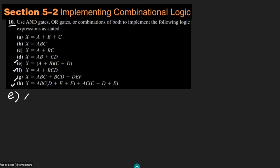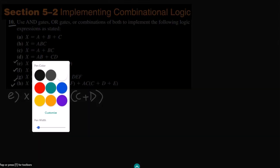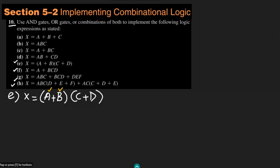In part E we have the expression X equal to A plus B, multiplied by C plus D. The first step, as we have previously seen, is to identify the number of inputs. The number of inputs here are 4: A, B, C, and D. We can see that C and D are added together, A and B are added together, and this bracket means this operation is performed first. At the end we multiply them, which is the AND circuit.